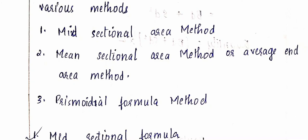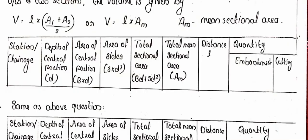Estimation of earthwork for road construction — second method: Mean Sectional Area Method, also called the Average End Area Method. The procedure is set up in a tabular column with the following columns: station or chainage, depth of central portion, area of central portion, area of sides, total sectional area, mean sectional area, distance, and quantity in embankment or cutting.